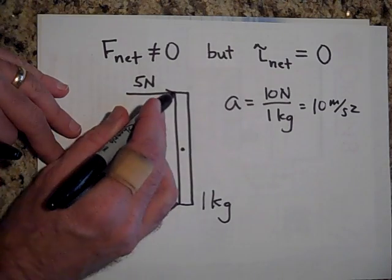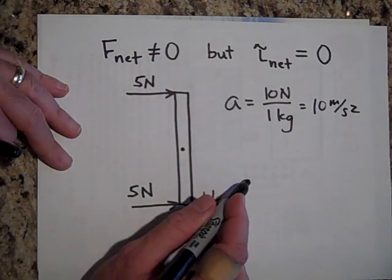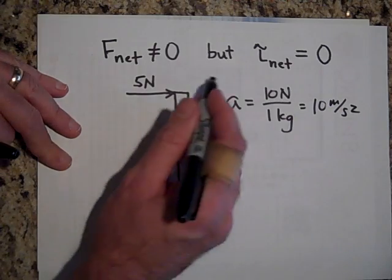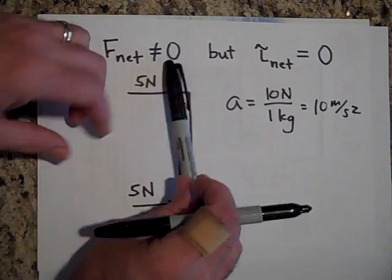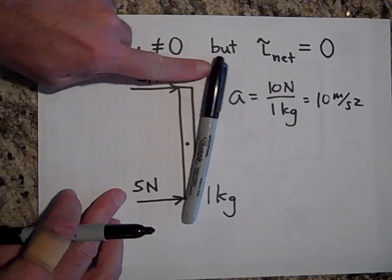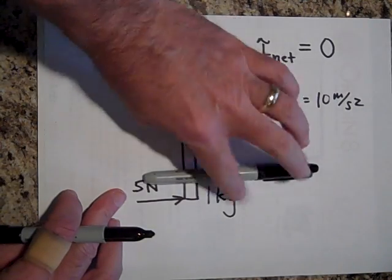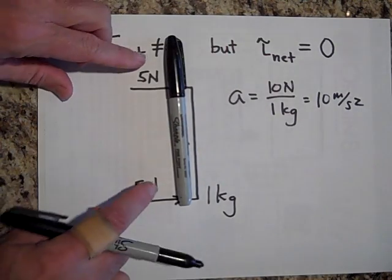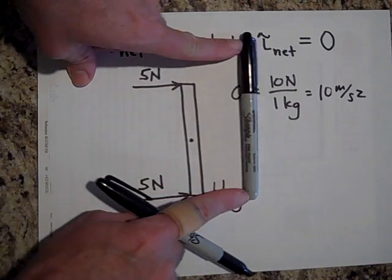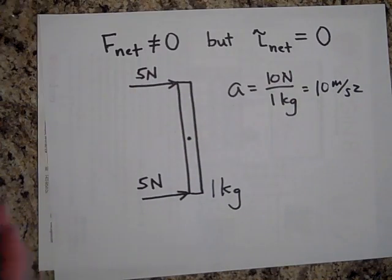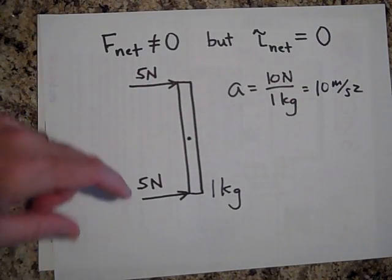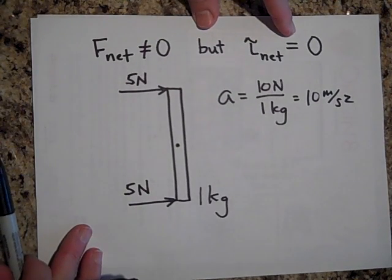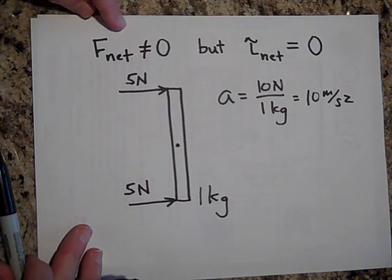Do you see how this one is trying to rotate it clockwise and this one's trying to rotate it counterclockwise? So if you just put one force on there, it does rotate. But if I put two forces on there, then it doesn't rotate. That's because there is no net torque, but there is a net force.